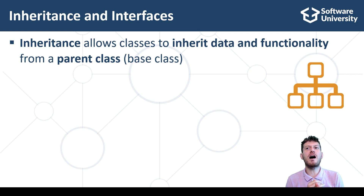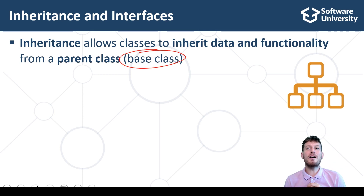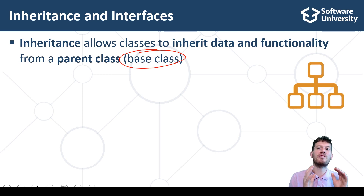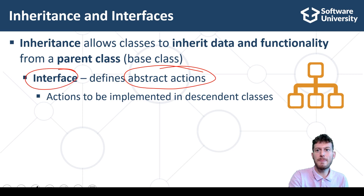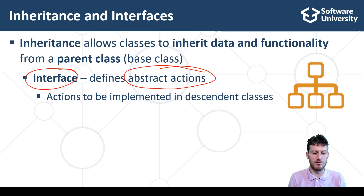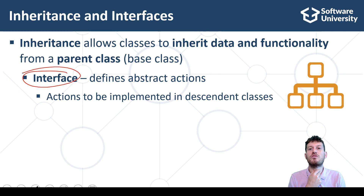Inheritance and interfaces are two other major concepts in object-oriented programming. Inheritance allows classes to inherit data and functionality from a parent class, also called base class. When a class inherits another class, the parent class fields are merged with child class fields, and they together form the set of data fields for the child class. Interfaces define abstract actions — actions to be implemented in the descendant classes. Interfaces define a set of empty or abstract methods which shall be obligatorily implemented in the child classes. Interfaces are also called contracts because they define a certain set of functionalities, a contract to implement certain methods.